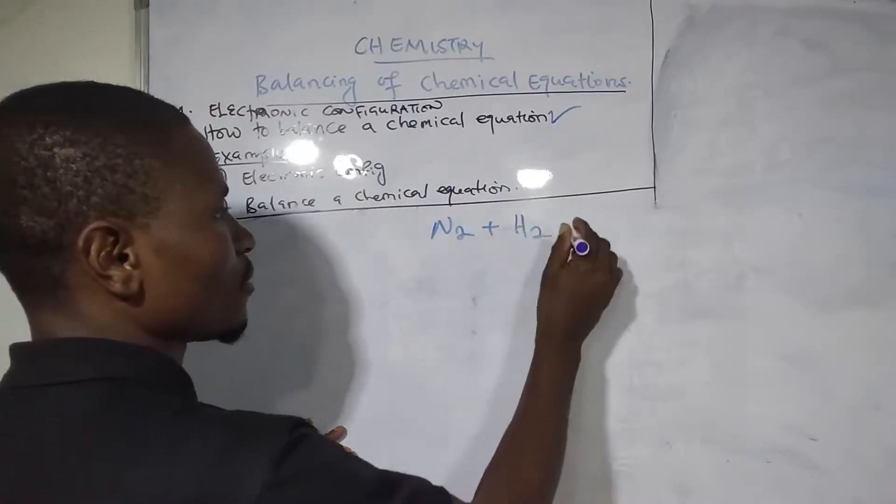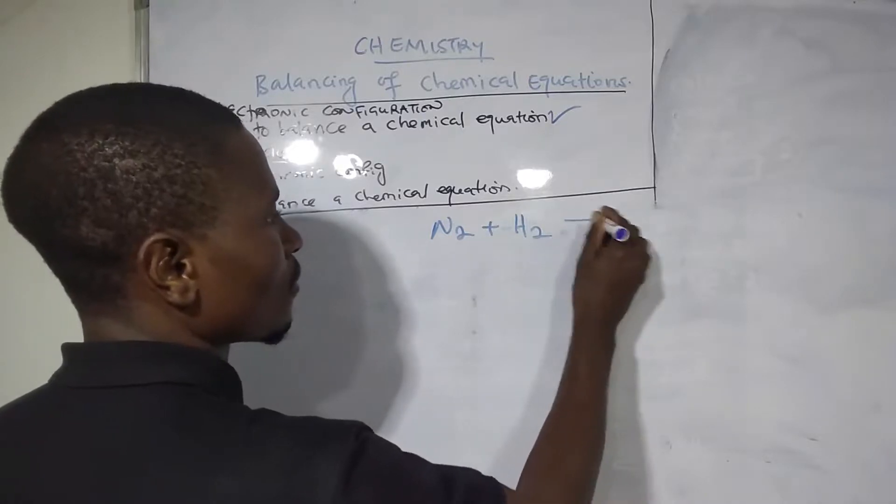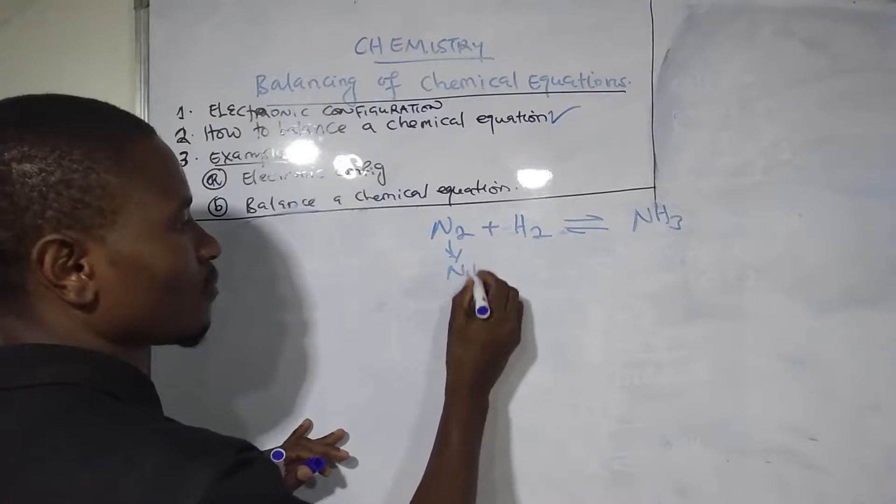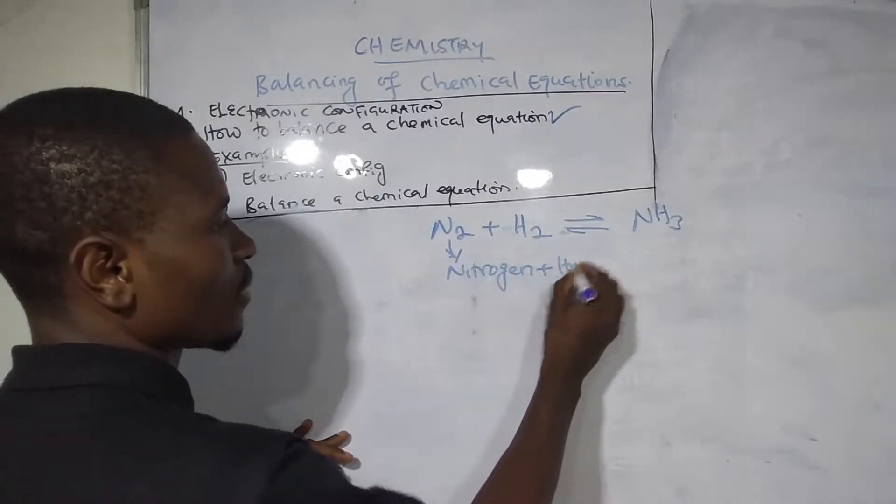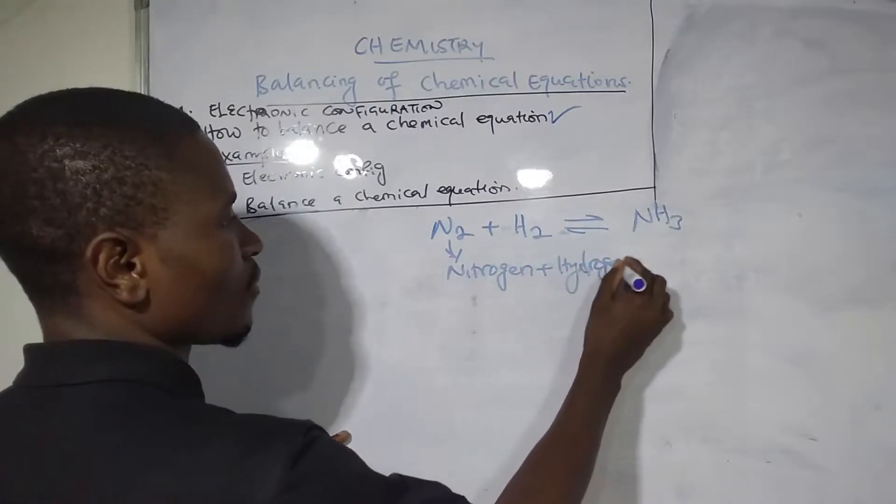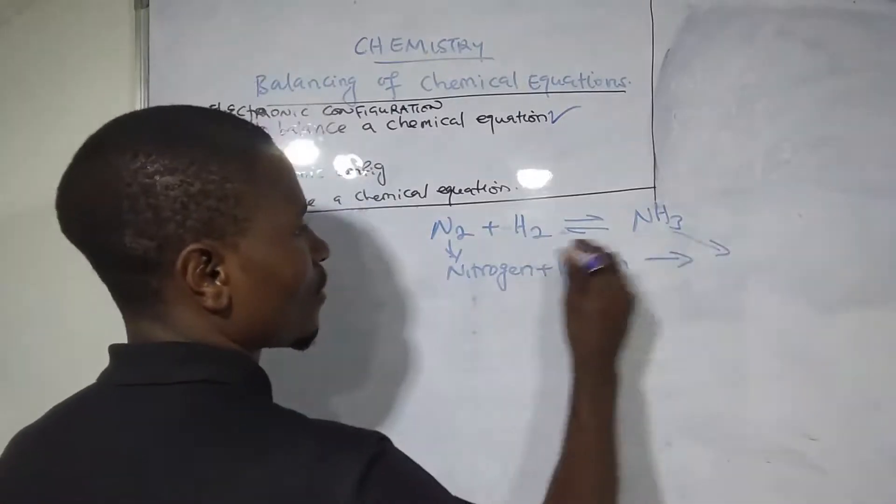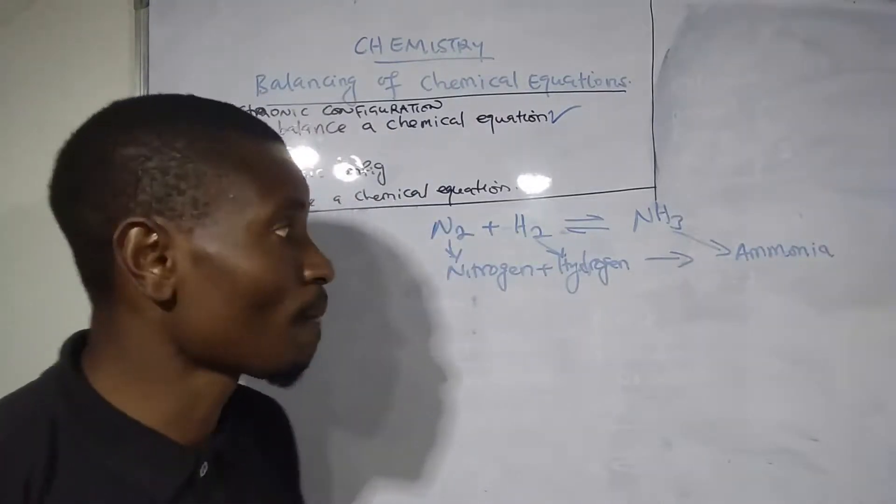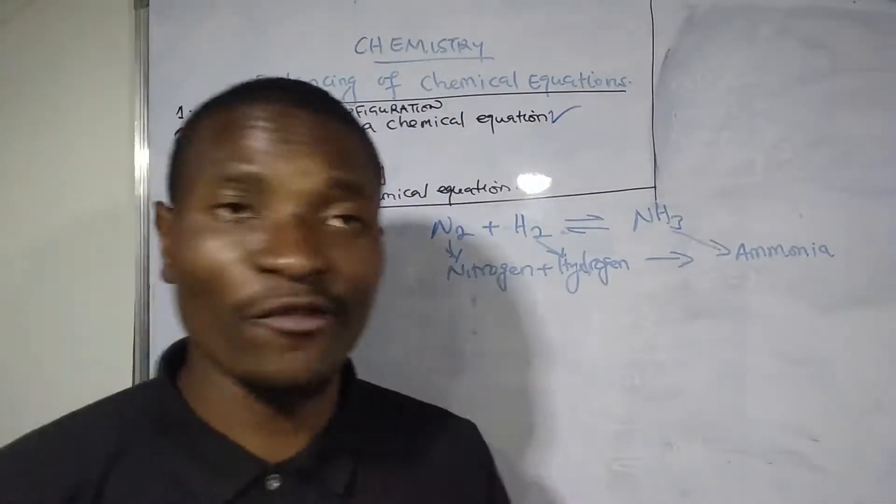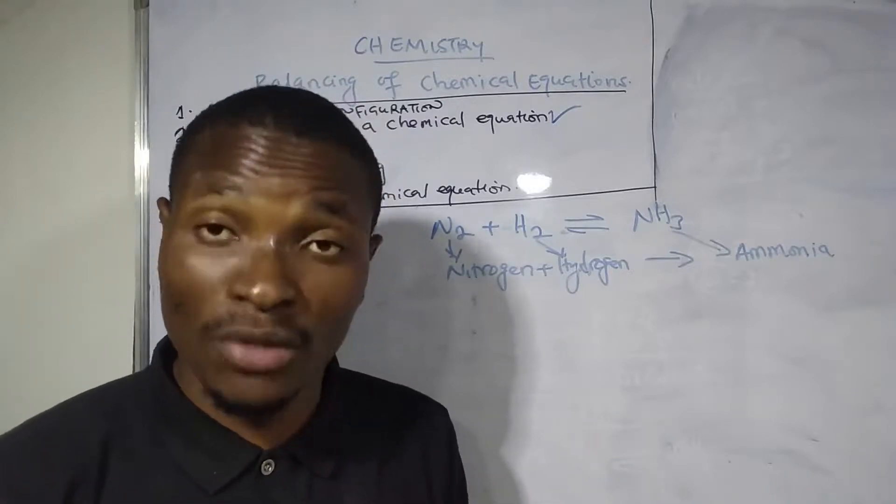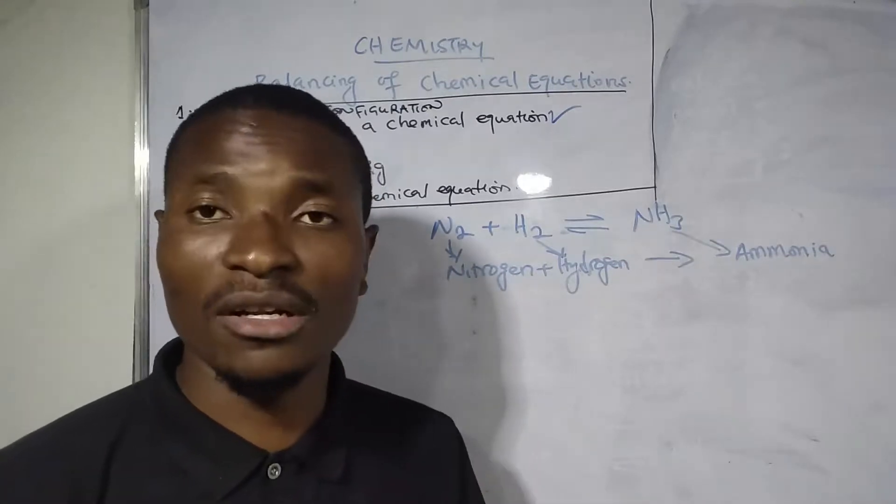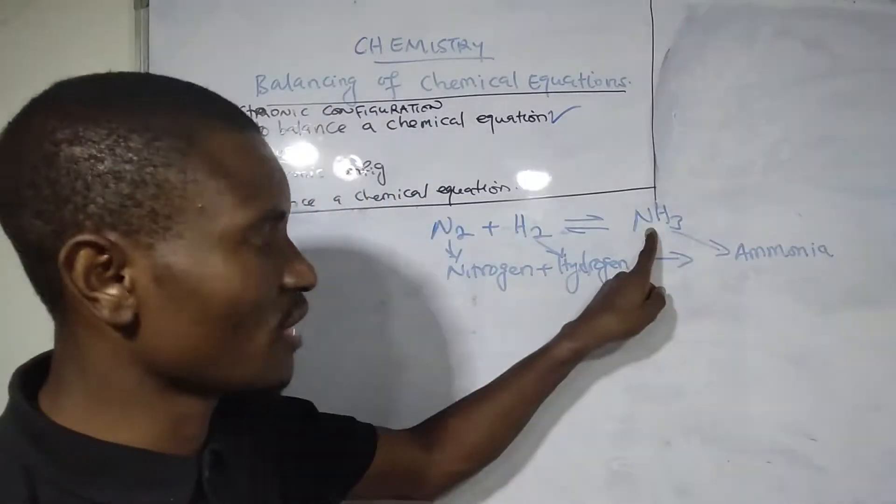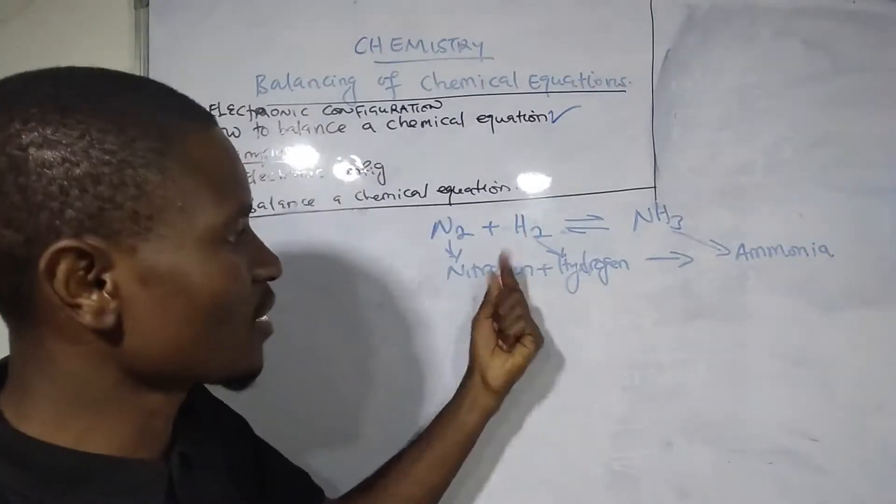This is nitrogen, and then hydrogen. We have nitrogen plus hydrogen, which produces ammonia. If you want to understand what kind of product is formed, ensure that you can convert the chemical reaction into an equation so you can understand what's going on. When they give you something like that, we call it ammonia.